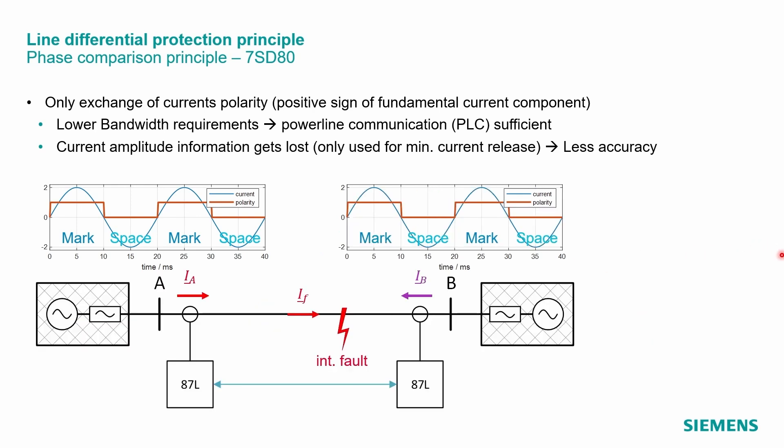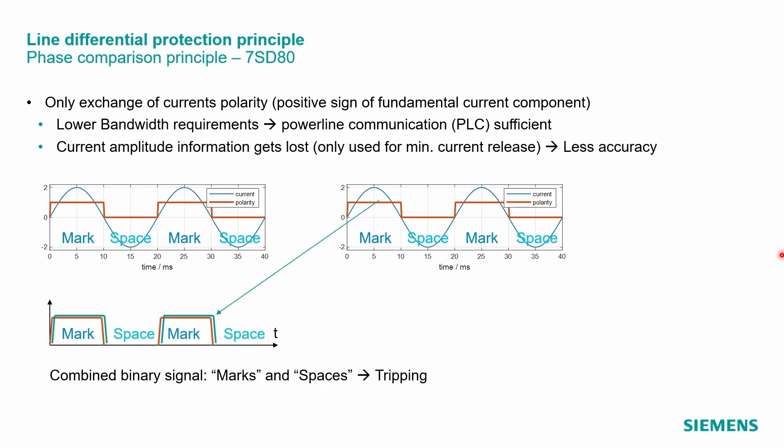For the internal fault condition, the currents at the line terminal A and B are more or less in phase. So both relays see the fault in the forward direction. The combined binary signal with local and remote current polarities result in a sequence of marks and spaces, shown here. This will result in a trip condition.